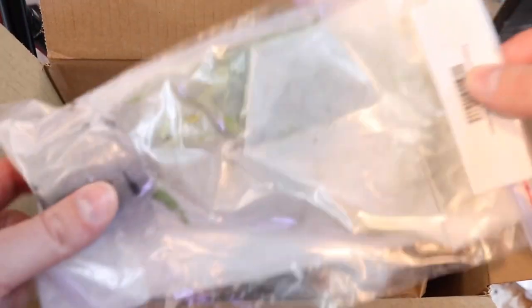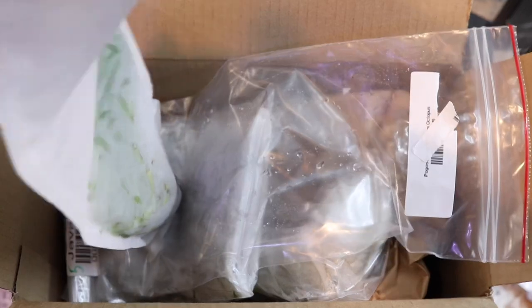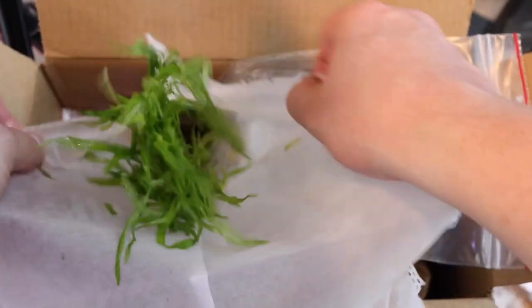We've got a nice Pogostemon stellatus octopus plant. The way the Aquarium Co-op is actually packaging their plants now is really nice. I actually really like these tags that they put on. So Pogostemon stellatus octopus, the way they put them in these Ziploc bags, so nothing's going to leak. It's a Ziploc bag, then you get this mesh bag that the plant's actually in.